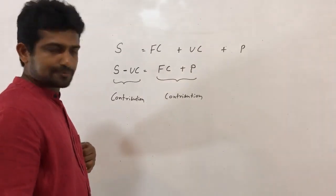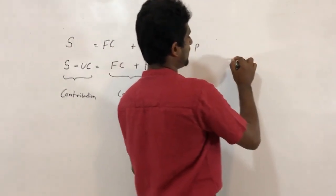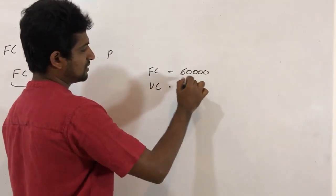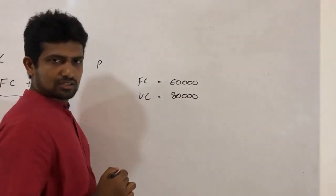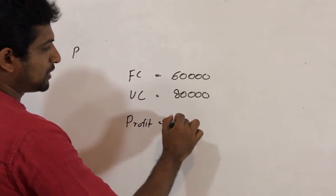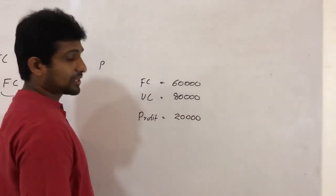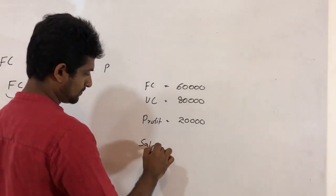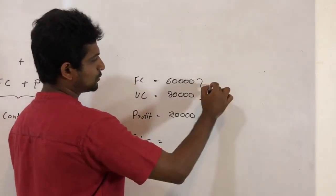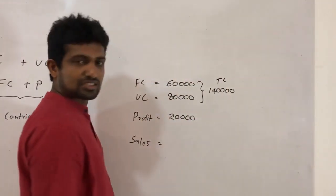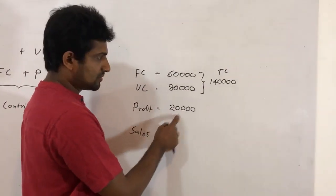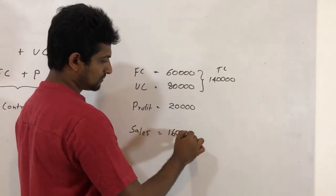Let me take a simple example. In a business, their total fixed cost is rupees 60,000 and their total variable cost is rupees 80,000. They want to earn a profit of rupees 20,000. Total cost is 60,000 plus 80,000, which equals 140,000. Adding the profit of 20,000 gives sales of 160,000.